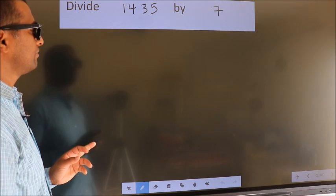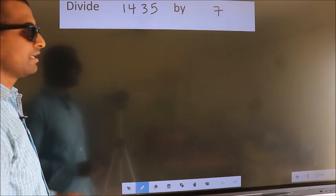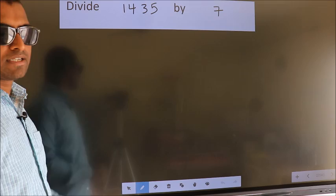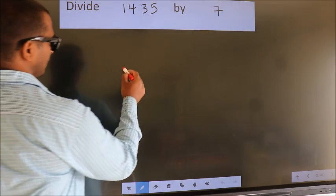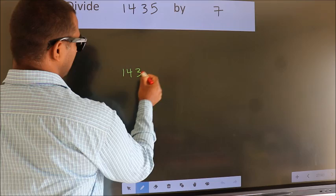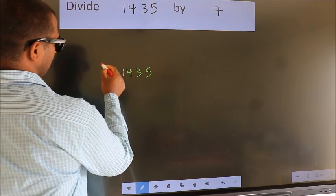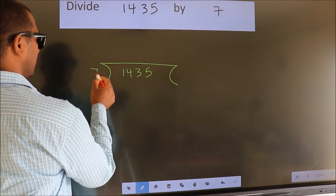Divide 1435 by 7. To do this division, we should frame it in this way. 1435 here, 7 here.